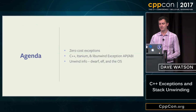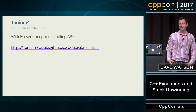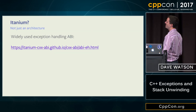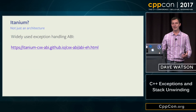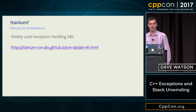I mentioned Itanium — it's an architecture, or was. People still use it, but when I say Itanium in this talk, I mean the exception handling ABI. It has outlived the architecture and become widely used for all the different Unix operating systems. When I say Itanium, don't think architecture — think exception specification. This is what everyone is using to unwind their exceptions.